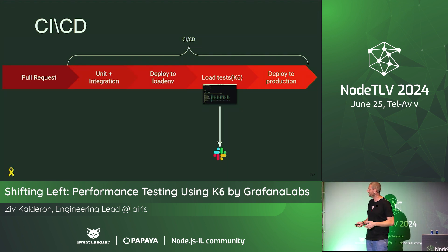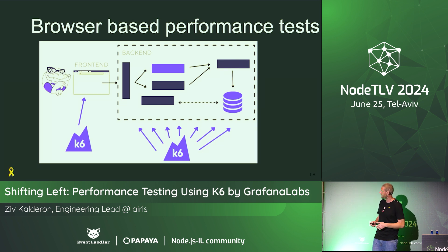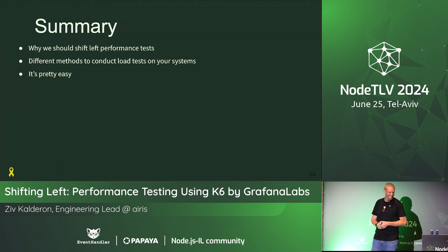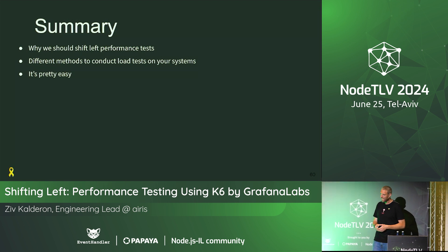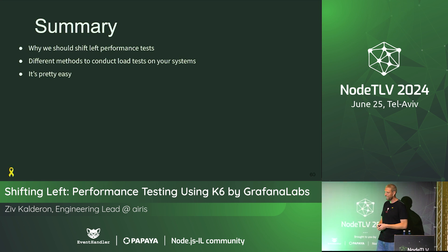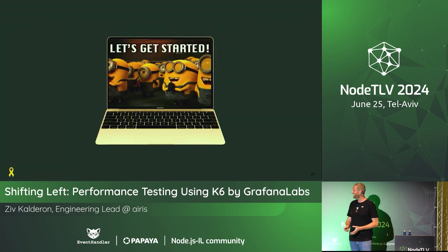What's next? Having this flow as part of CI/CD can help us find out if a new feature breaks our SLO. For full-stack developers, there are browser extensions that help create automation. Chaos testing is also highly appreciated when everything goes wrong. I hope I've convinced you why we should shift left performance testing, the different methods for running SLO tests and measuring time, and that it looks easy enough to try on your own. Let's get started — thank you.